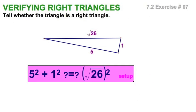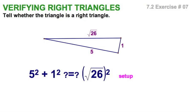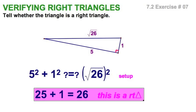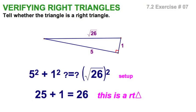How about this triangle? Here we go. We've got 5² and 1², √26 squared, which, of course, is a right triangle.